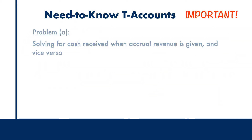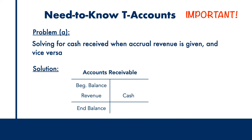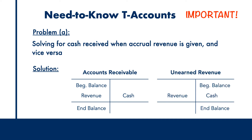Let's begin by tackling the first half of the problem: solving for cash received when accrual revenue is given, and vice versa. The solution is simple — the T-accounts for accounts receivable and unearned revenue. Take a minute and note these down. In the questions, you're either going to be given the value of the revenue and asked to solve for the cash received, or it's going to be the other way around.